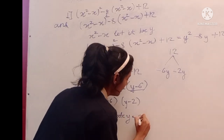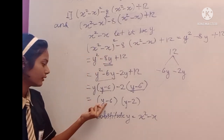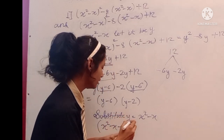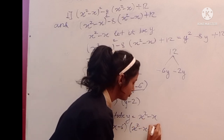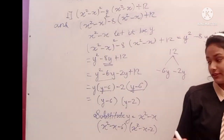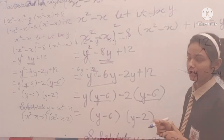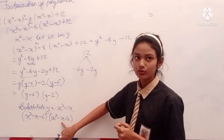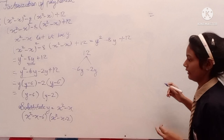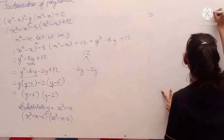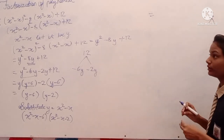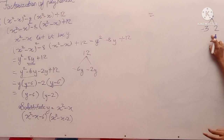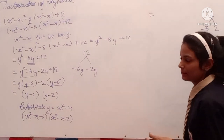We substitute y equals x squared minus x. So we replace each y to get (x squared minus x minus 6) and (x squared minus x minus 2). Now we have to split the middle term again for x squared minus x minus 6. We need two numbers whose multiplication is 6 and whose difference is 1 (since x has coefficient 1). The two numbers are minus 3 and plus 2: multiplied they give minus 6, subtracted they give 1.